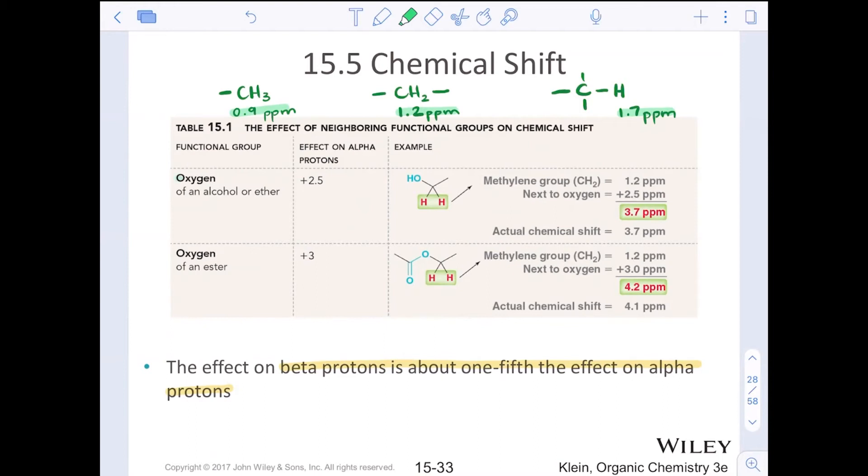So these are what I want to call our base shift, our baseline chemical shift. And then what happens is neighboring functional groups will have an effect on this chemical shift, will have an effect on this baseline. And so if that is an oxygen from an alcohol or an ether, what we see is the effect on those protons is plus 2.5 ppm. So you have a methylene group, that is a methylene group, its base is 1.2, because it's next door to an oxygen, we can predict its shift would be 2.5 more, 3.7. The actual chemical shift for those CH2 groups in ethanol is 3.7.